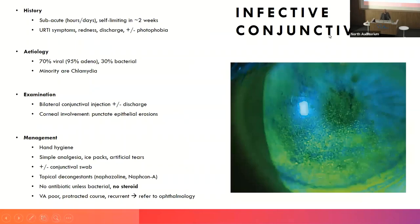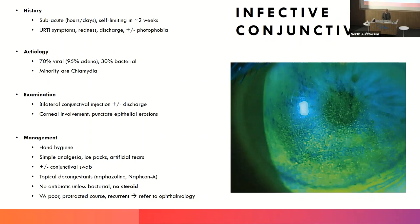The next image shows fluorescein staining of the cornea with lots of pinpoint areas of uptake — probably thousands of little spots. These are called punctate epithelial erosions: 'punctate' meaning dot-like, 'epithelial' meaning the frontmost part of the cornea, 'erosion' meaning loss of cells. This is conjunctivitis with corneal involvement — the person will be really uncomfortable, like having thousands of micro-abrasions on the eye.